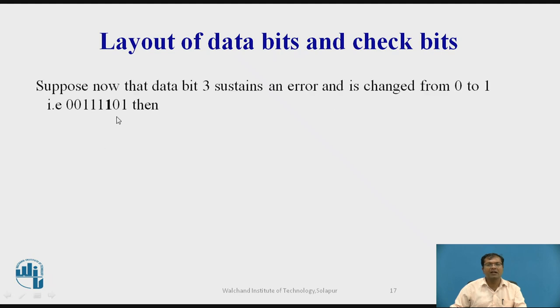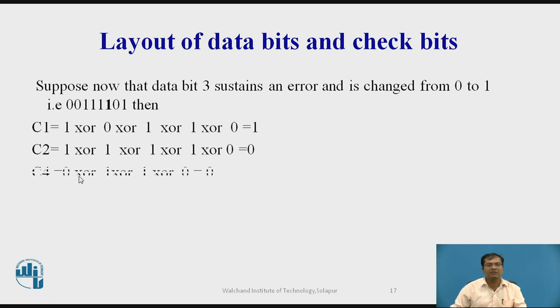If it is under error at bit 3, then it becomes 1 instead of 0. Then the c1, c2, c4 and c8 values are like this: 0, 0, 0, 1. That is 0, 0, 0, 1.